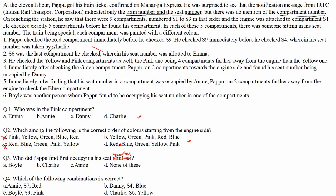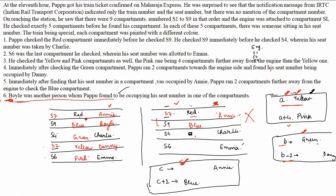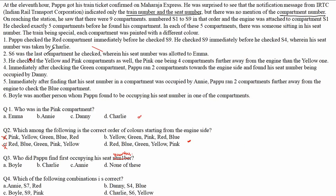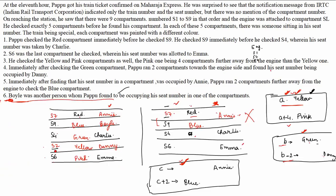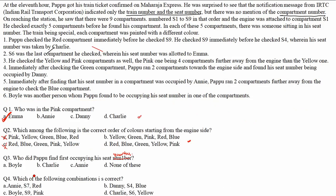Checking the answers: for Question 1 — who was in the pink compartment — Emma was present in S6 which is pink, so the answer is option A. For Question 2 — correct order of colors starting from engine side — S2 is yellow, S4 is green, S6 is pink, S7 is red, S9 is blue. So the answer is yellow, green, pink, red, blue — option B.